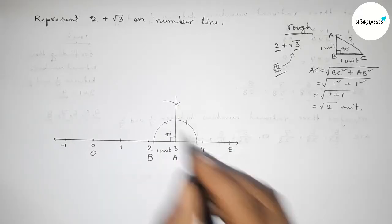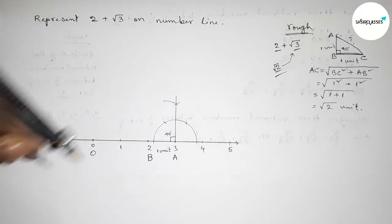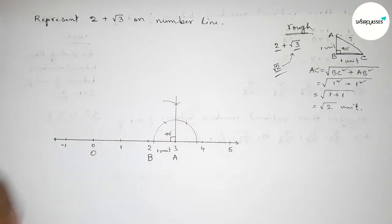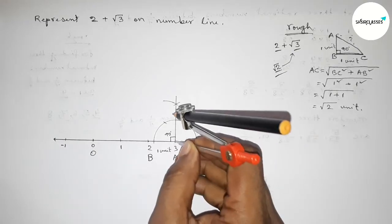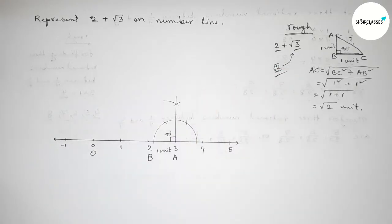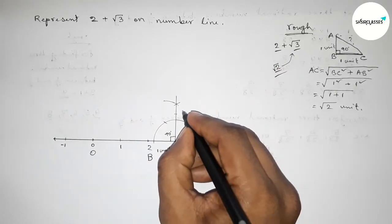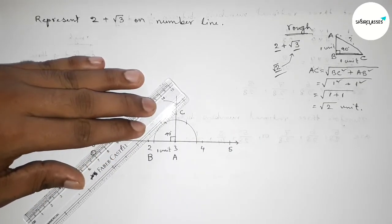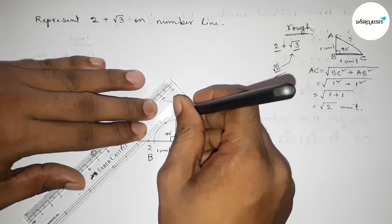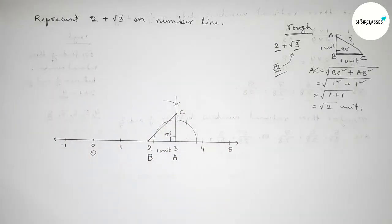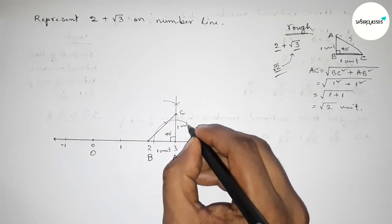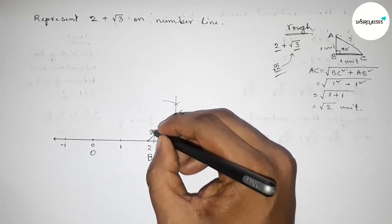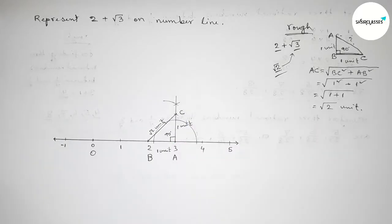Taking 1 unit length — since between any two numbers is 1 unit — putting the compass at A and cutting to mark point C. Now joining B and C. This is 1 unit length, so we can say BC equals root 2 units.